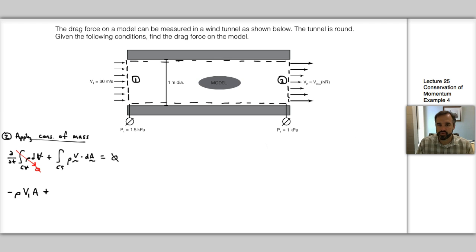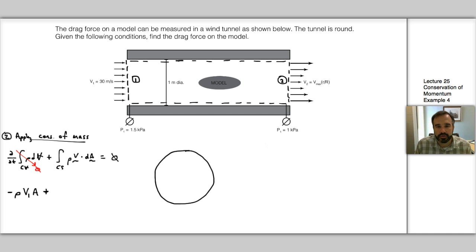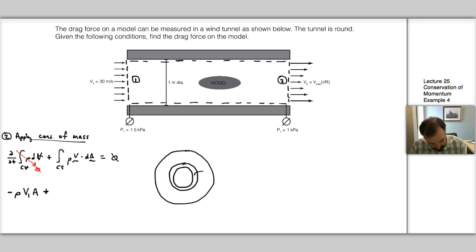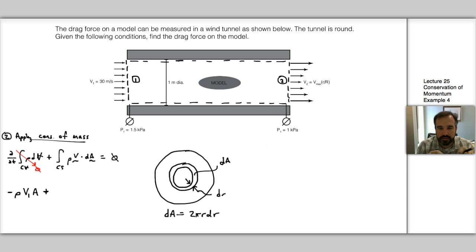We need to think about how to define our differential area to make the integral manageable. For a round cross-section, dividing into orthogonal squares or rectangular slices is complicated. Instead, we define dA as an annulus of width dR around the centerline, so dA equals 2πr dR. This expresses the area as a function of r, which is also the dependent variable in our velocity equation.